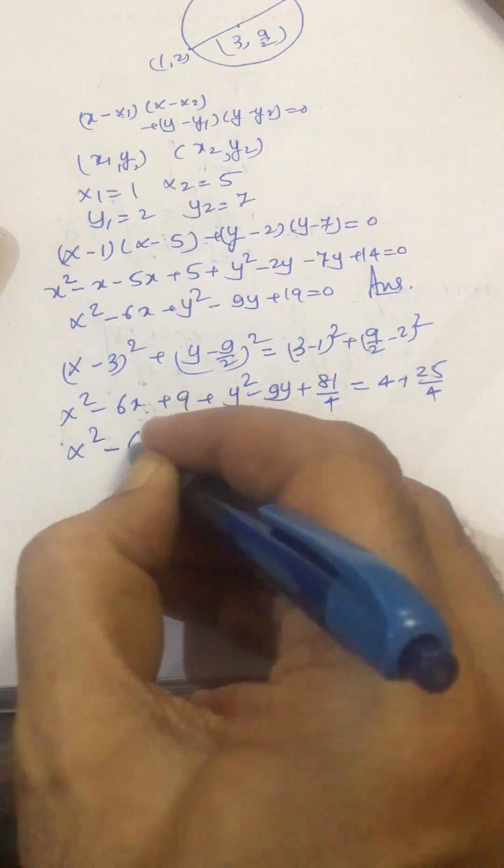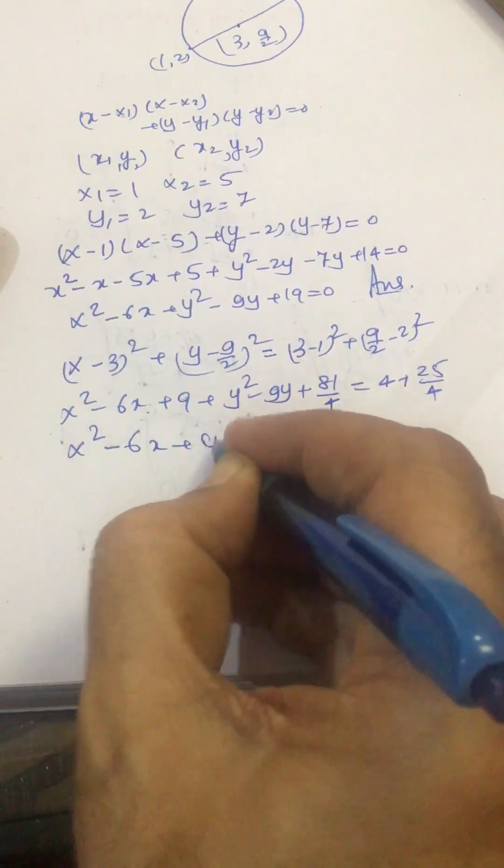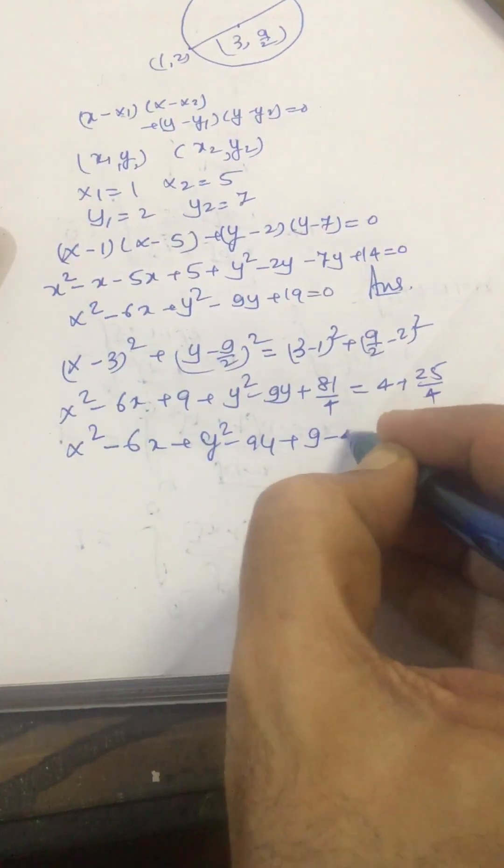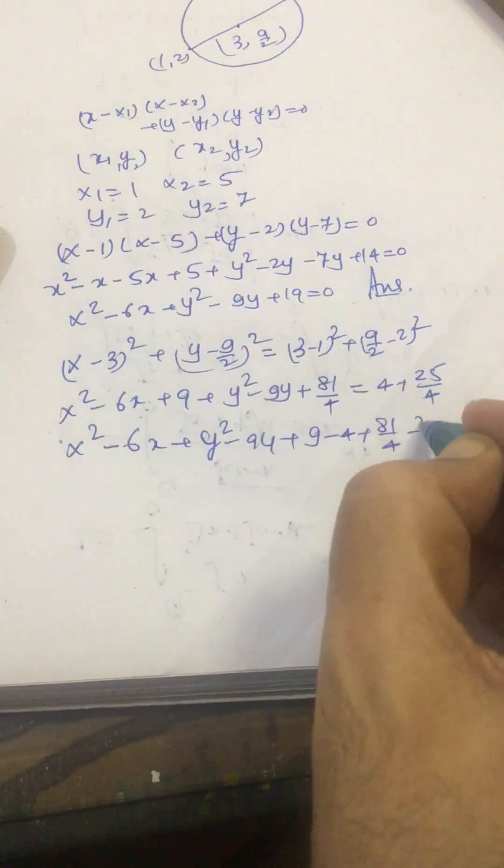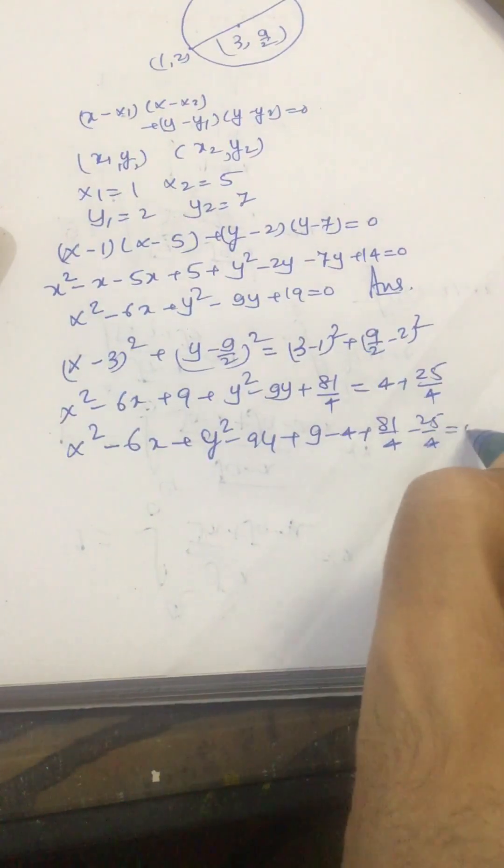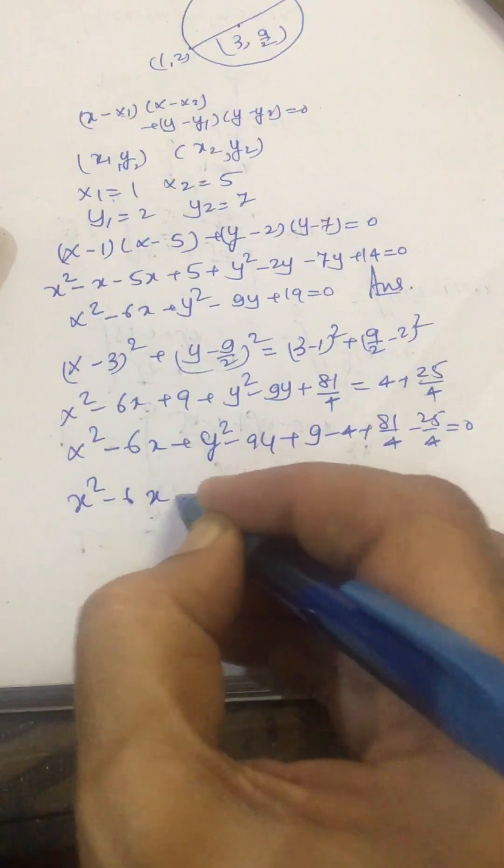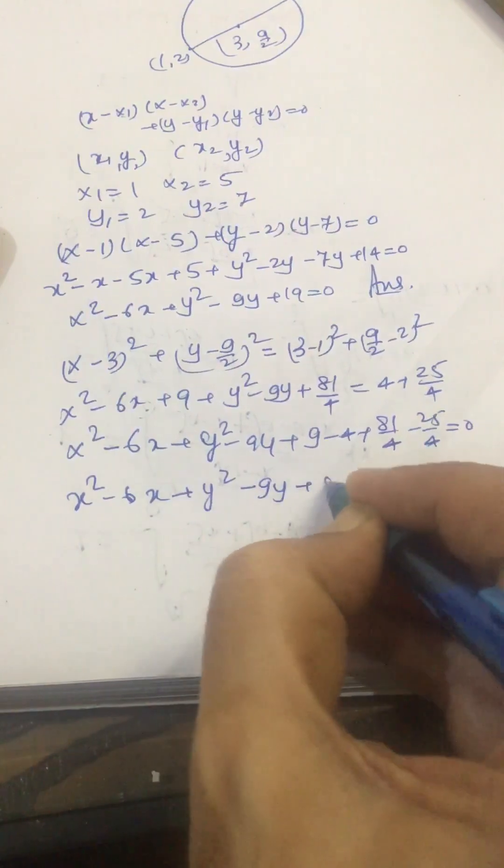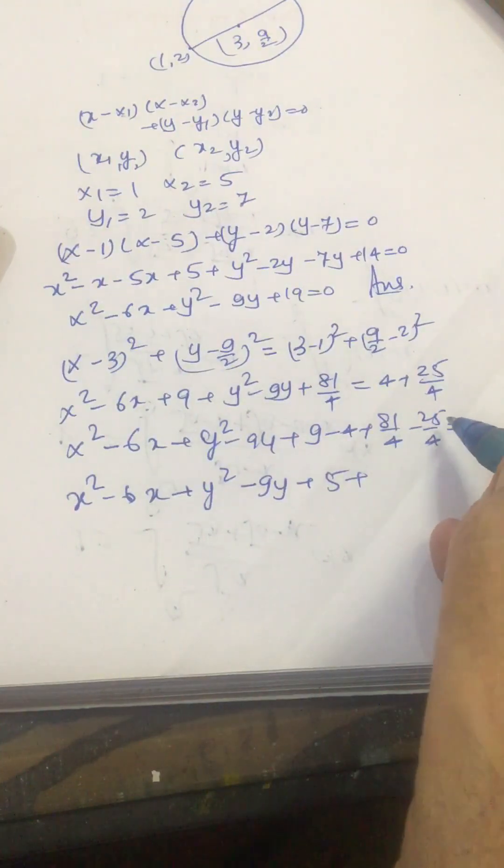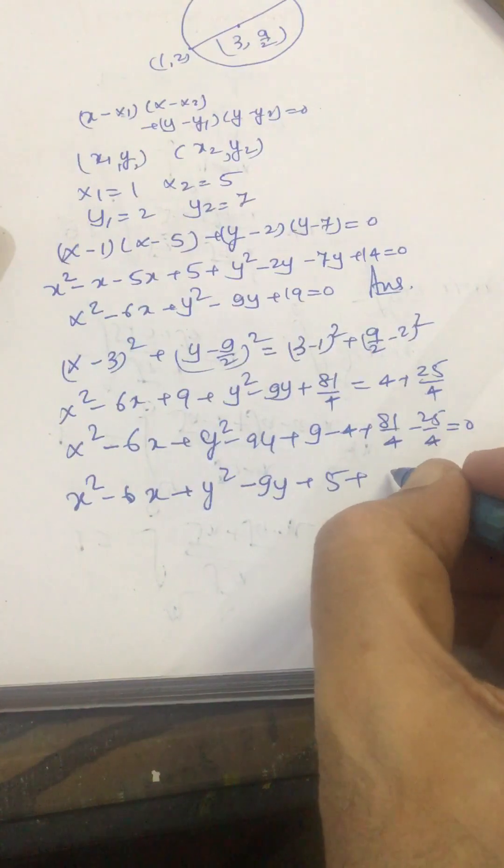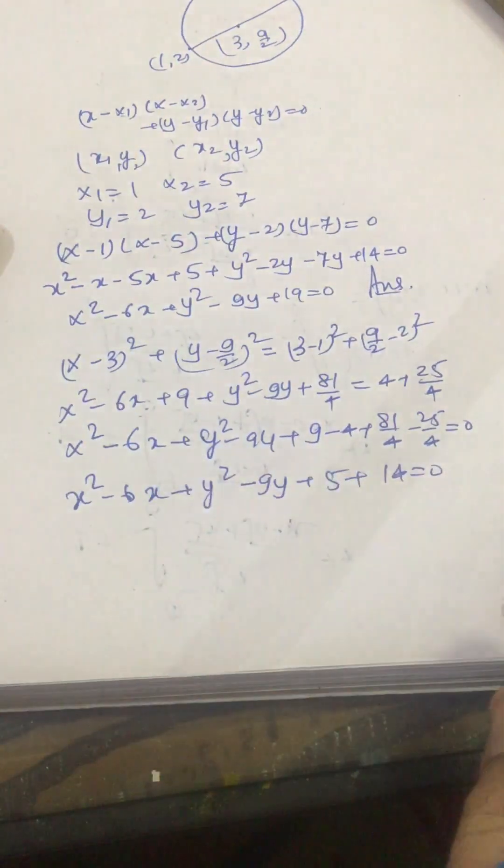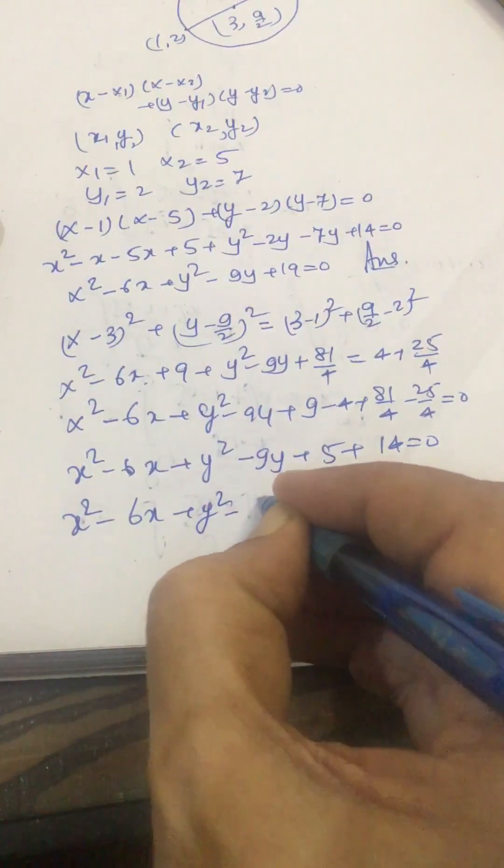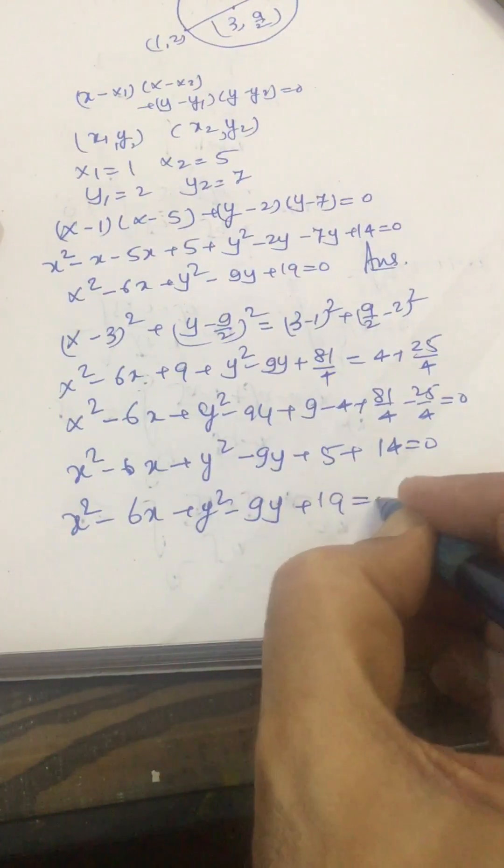This we can write: x² - 6x + y² - 9y + 19 = 0.